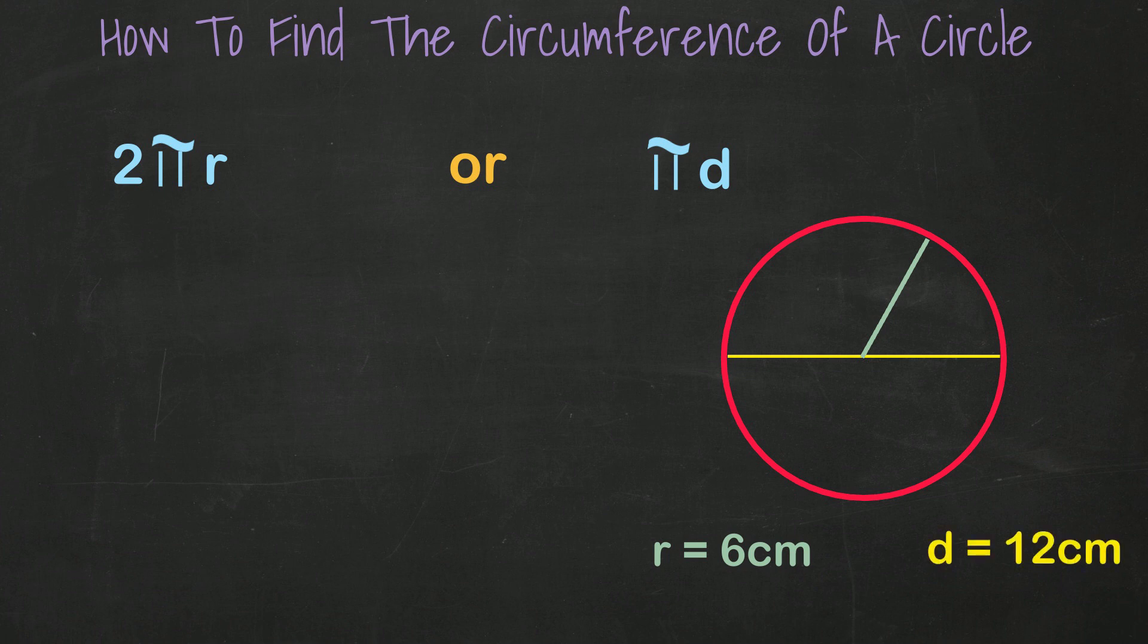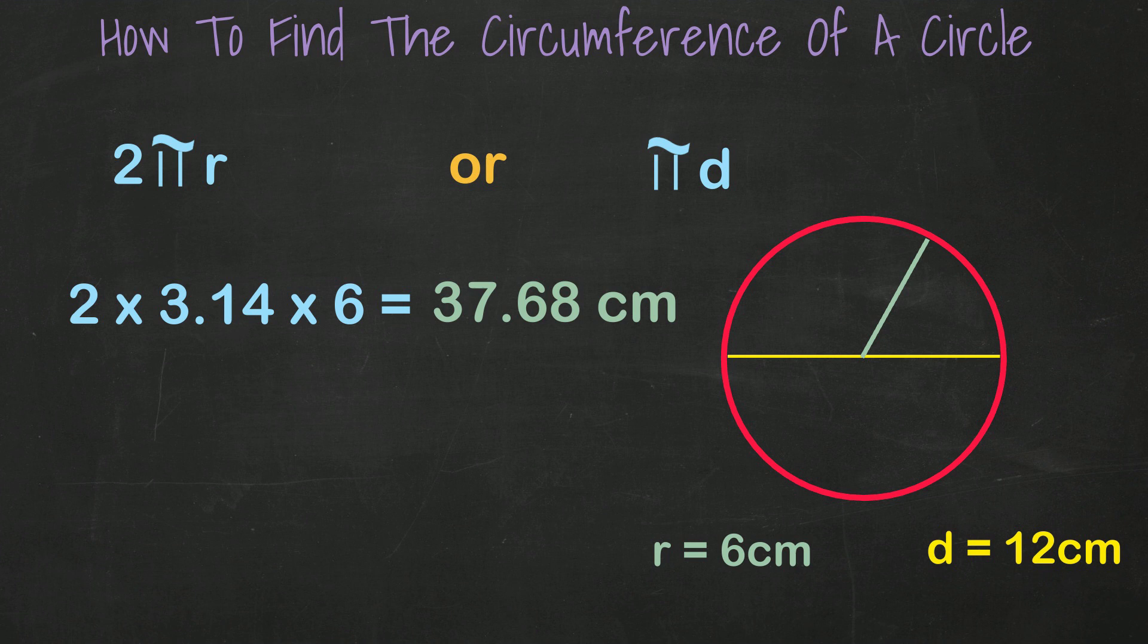We take 2 times 3.14 of pi times our radius of 6, and we get 37.68 centimeters. You get the same answer when you multiply the diameter of 12 times pi.